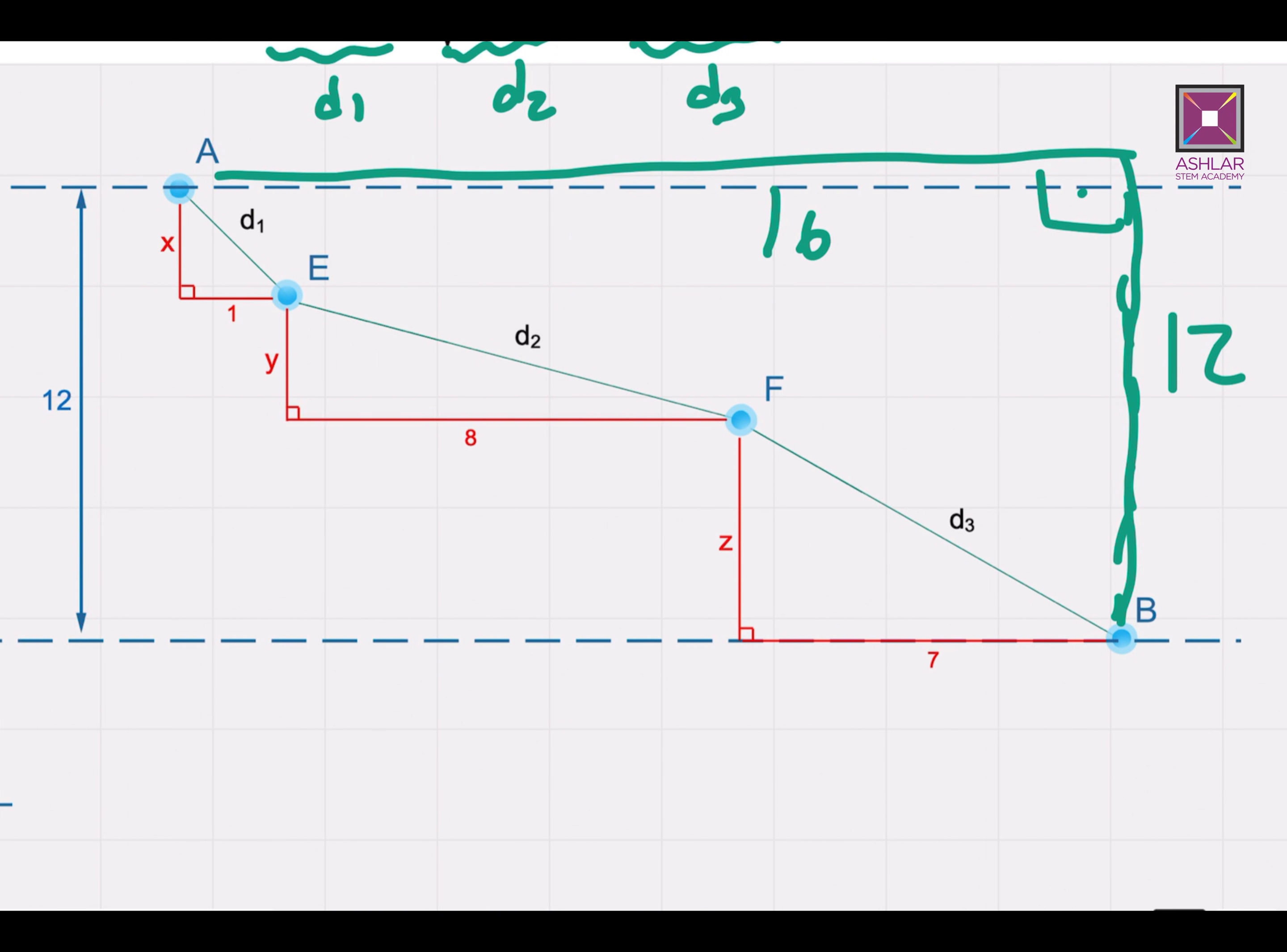So if I fixed point A, so if I know where I start my motion, point B is always fixed. It's always 16 units to the right and 12 units down with respect to A. So this conclusion is regardless of the values of x, y, and z.